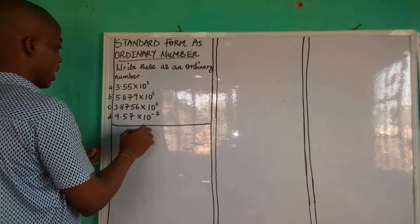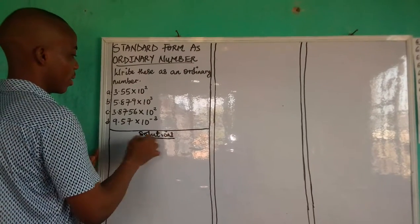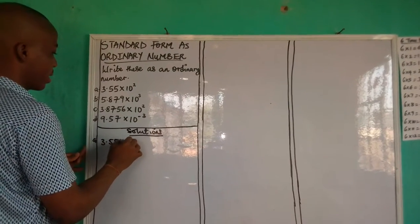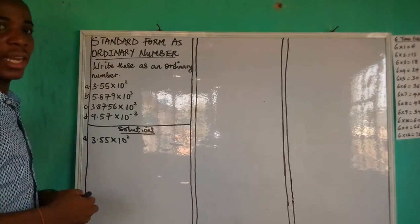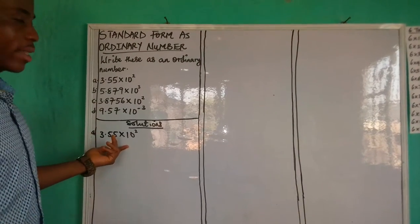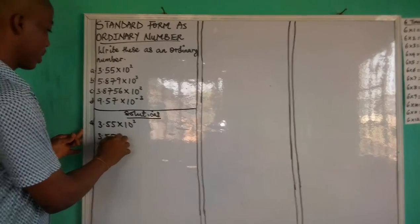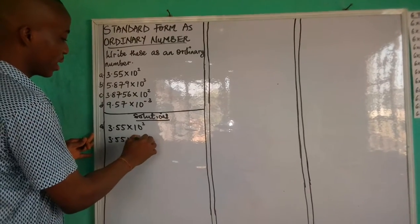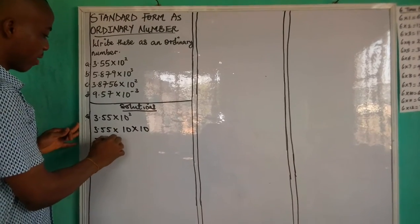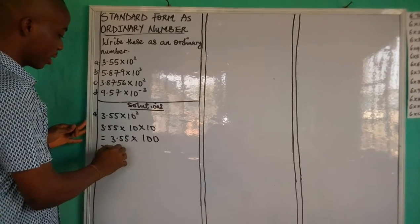So we start with the first one. We want to write 3.55 times 10 raised to the power of 2 as an ordinary number. Remember, 10 raised to the power of 2 is 10 times 10. So we shall have 3.55 times 10 times 10, which is 100.